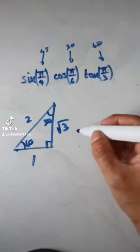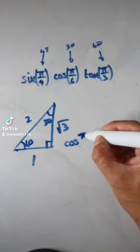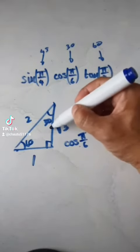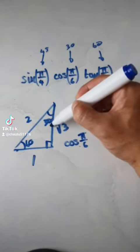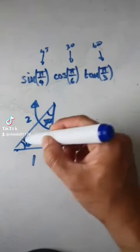So if you want to know what is cos of pi over 6? Well, cos is this thing here. Cos would be root 3 over this length, which is 2.